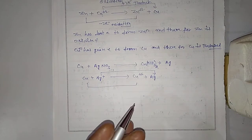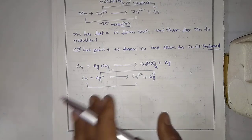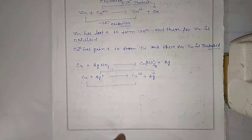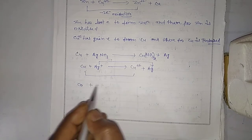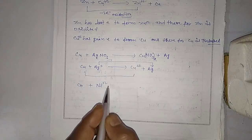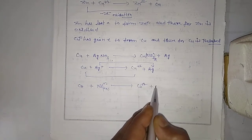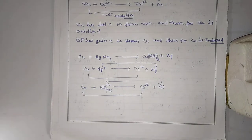Similarly, you can take the example of cobalt and nickel. If cobalt metal is mixed into a nickel salt solution, cobalt will undergo oxidation and nickel will undergo reduction. So: Co + Ni²⁺ (aqueous) → Co²⁺ + Ni. In this reaction also, electron gain and electron loss determine which is oxidized and which is reduced.